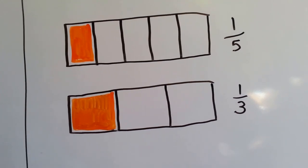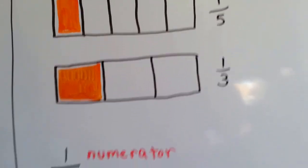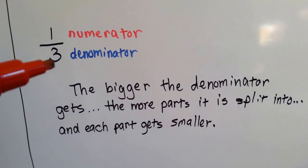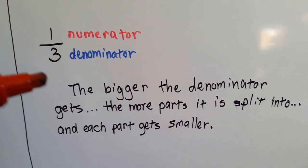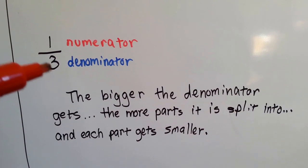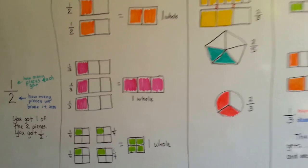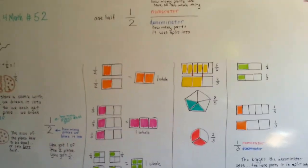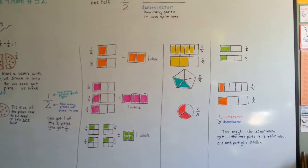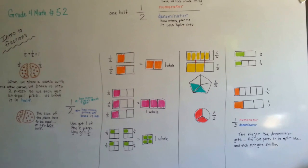If I gave you half a pie, it would be a lot more pie than if I only gave you an eighth of a pie. So, the top number is the numerator, the bottom number is the denominator, and remember that the bigger the denominator gets, the more parts it's split into, and the parts get smaller, because there's more of them.